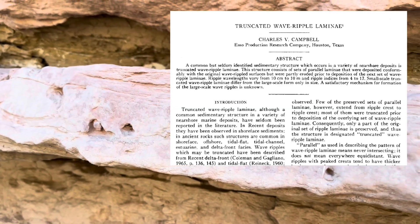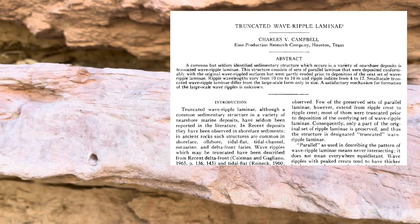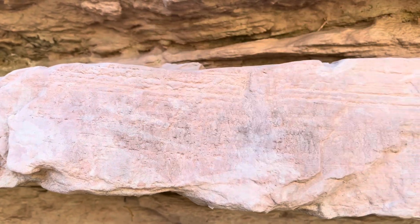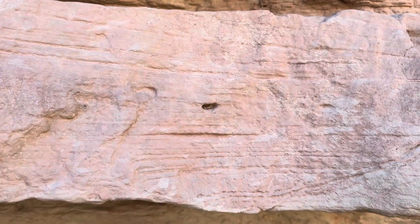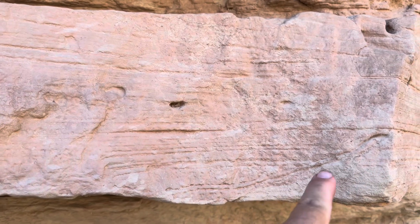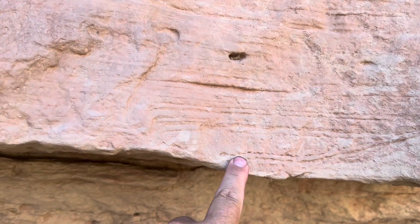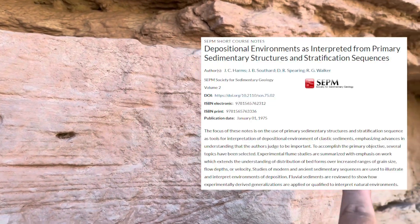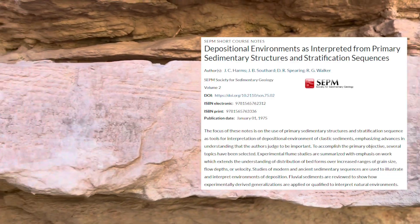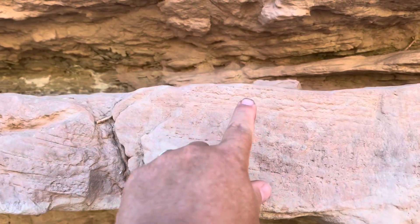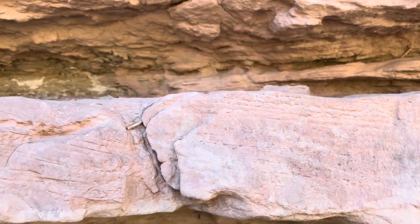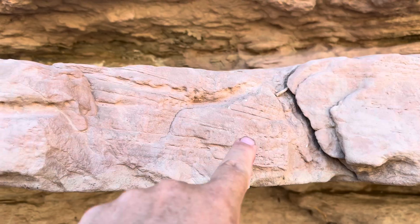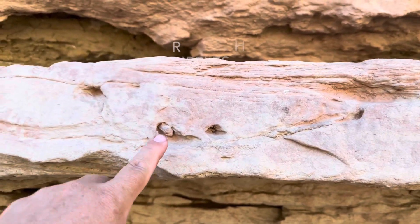When Campbell first described hummocky cross-stratification in 1966, he actually called it 'truncated wave ripple laminae' based on the structures we're seeing right now — these laminations throughout the bed. Like all good scientists, geologists love creating new terminology and publishing papers to broadcast it. So in 1975, Harms and co-authors renamed it as hummocky cross-stratification, and that name stuck. They provided a refined description to include not just the scoured base and truncation surfaces lined with laminae, but also highlighted that these beds typically have a flat top with some ripples and then a drape of mud and silt.